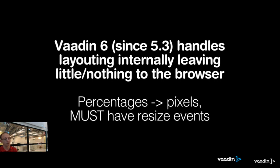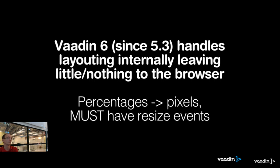Because Vaadin 6 sets pixels everywhere, it has to have resize events — even 100% width wouldn't work without this, because when you resize the browser you have to recalculate layouts. This wasn't implemented in Vaadin 6 to solve the resize problem — it was more to solve the IE6 problem. When you calculate everything yourself, you have full control. In IE6, you don't have enough CSS support to build vertical layouts or grid layouts or basically any more complex layout.